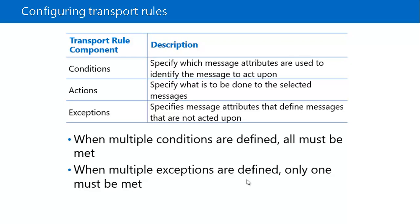If you configure multiple exceptions on the same transport rule, only one exception must match for the transport rule action to be cancelled. When you specify multiple values on a single exception, the exception is satisfied if at least one of the values is met.